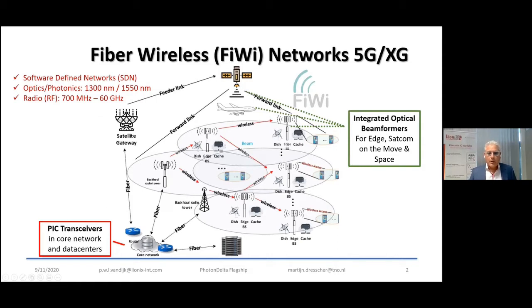And everything in this network is controlled by software defined network, and the optics in there have wavelengths between 1300 and 1550 nanometer transparent for the optical fiber. And in radio, we use frequencies typically between 700 megahertz and 60 gigahertz. So this is a complex infrastructure.